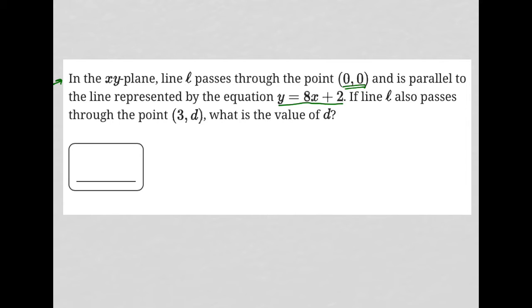Now, when two lines are parallel, that means their slopes are equal. So line L - what do we know about line L? We know that line L passes through (0,0) and we know that its slope is 8.